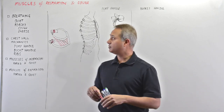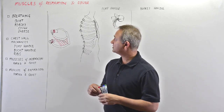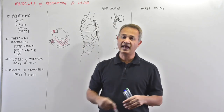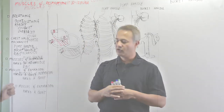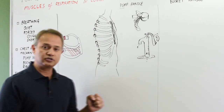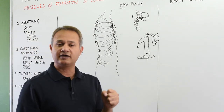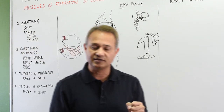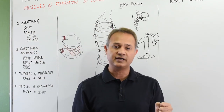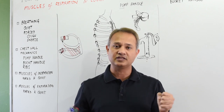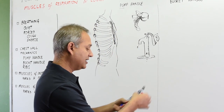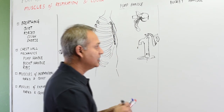This is Mubeen, and we are talking about pulmonology. The lecture today is about the muscles of respiration and cough. We will look at quiet inspiration, quiet expiration, and the diaphragm.